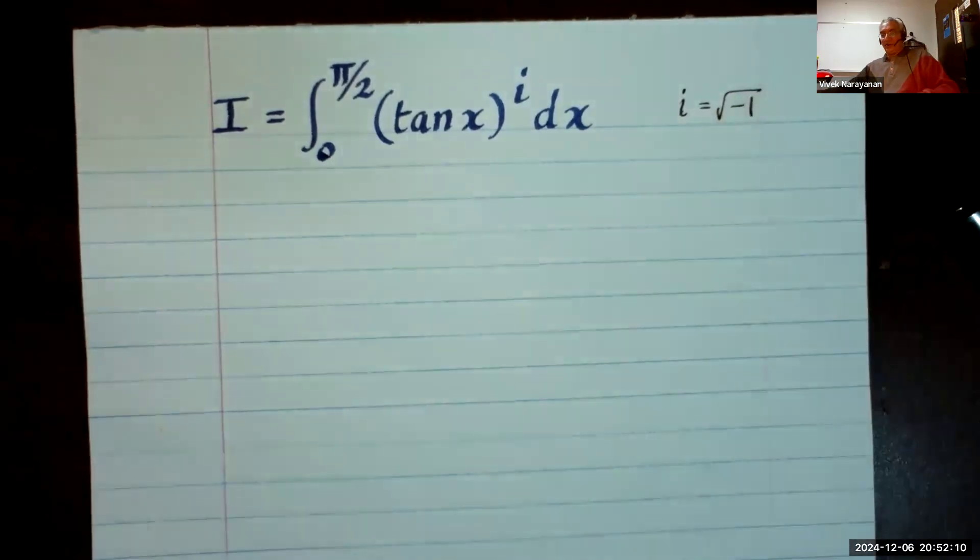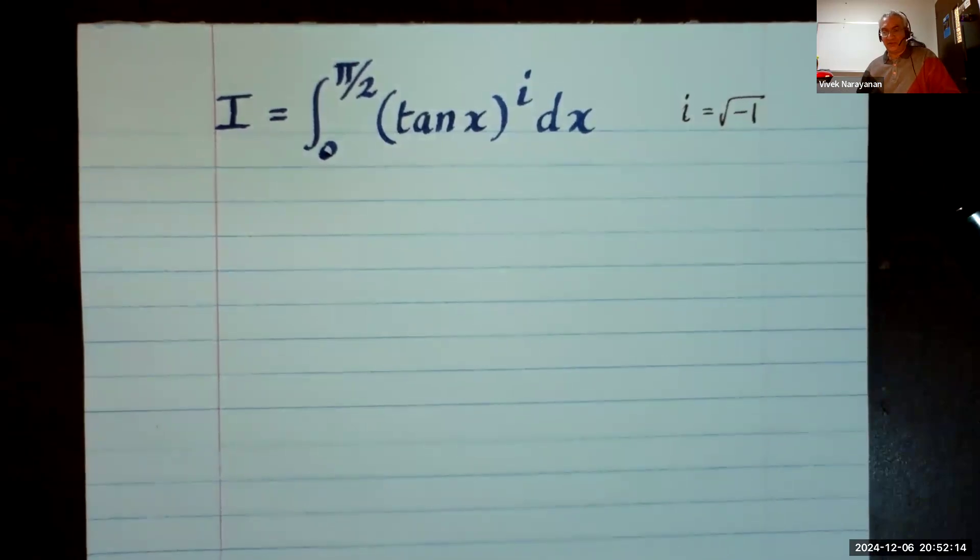Now you can do this using complex analysis and rectangular contours by doing various substitutions, but I think a more fun way to do this is using beta and gamma functions. So I'll take that route.